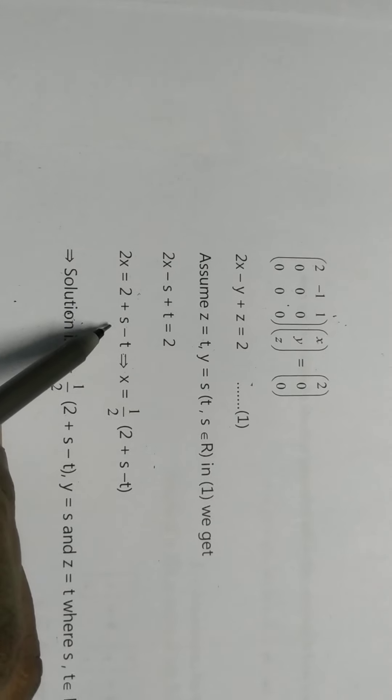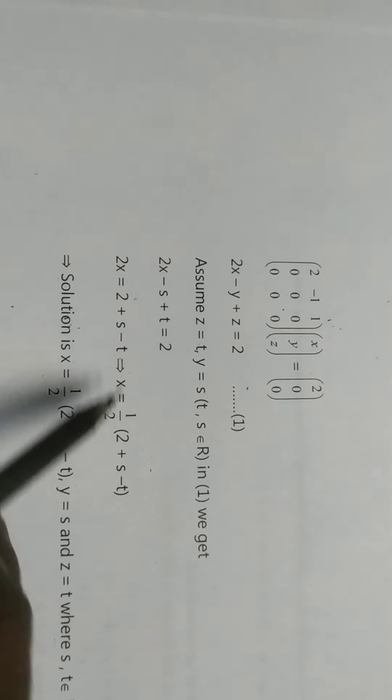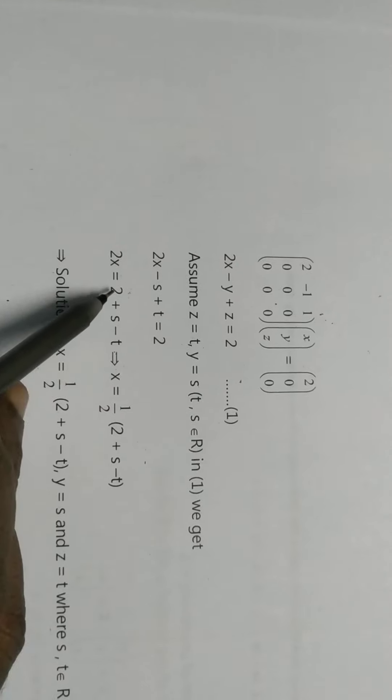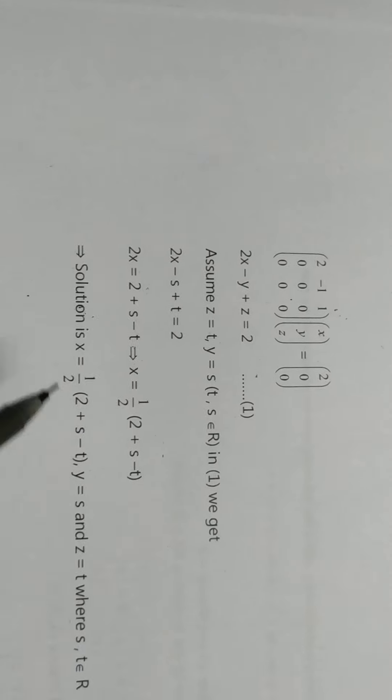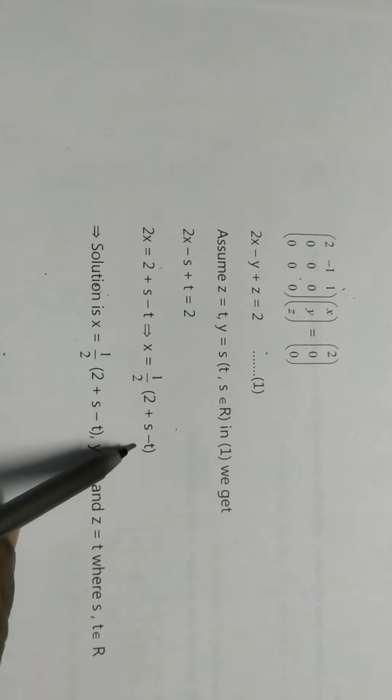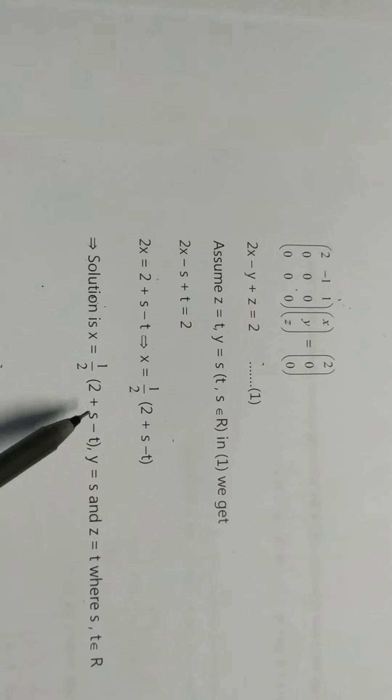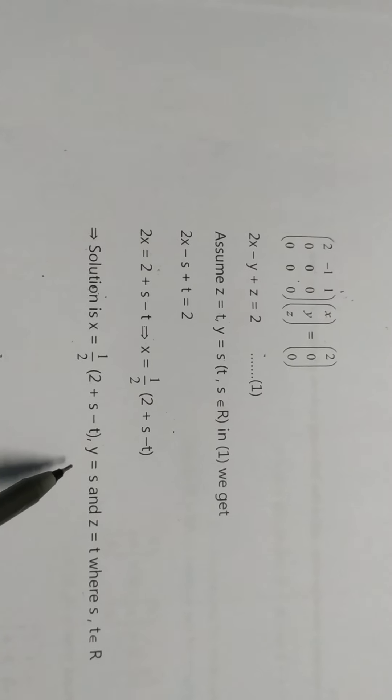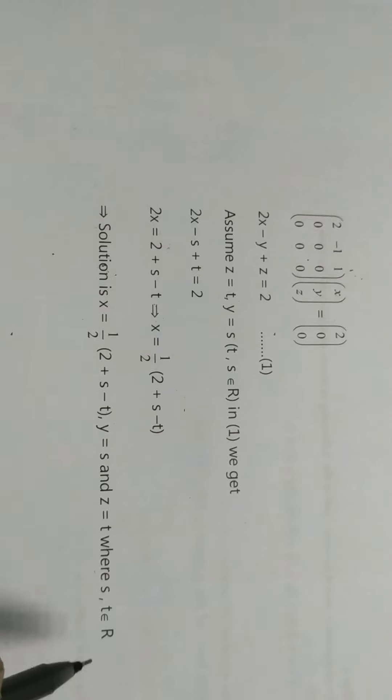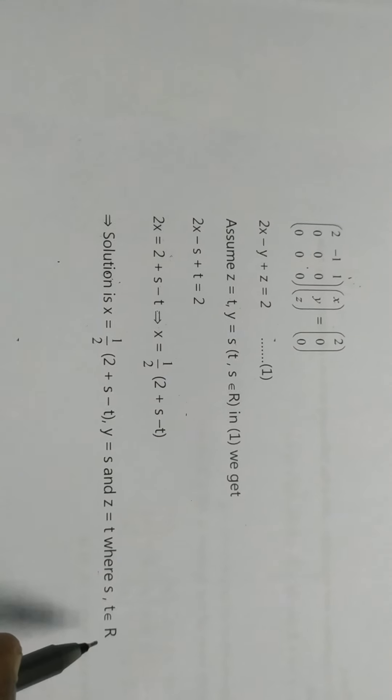Let Y equals s and Z equals t. Then 2X equals 2 plus Y minus Z, so X equals 1 by 2 times (2 plus s minus t). Solution is X equals half of (2 plus s minus t), Y equals s, and Z equals t where s and t belong to real numbers.